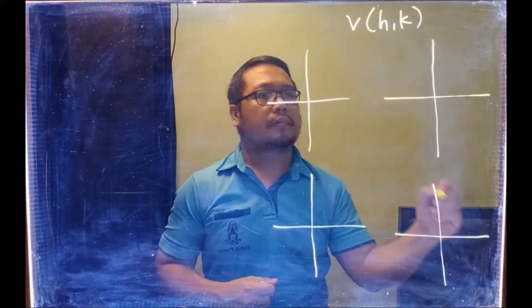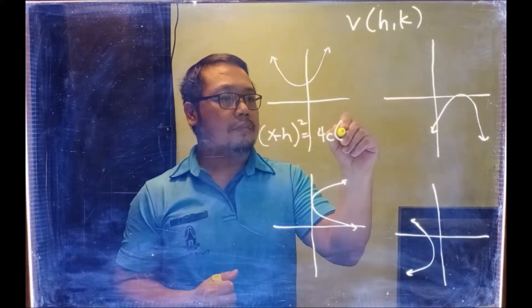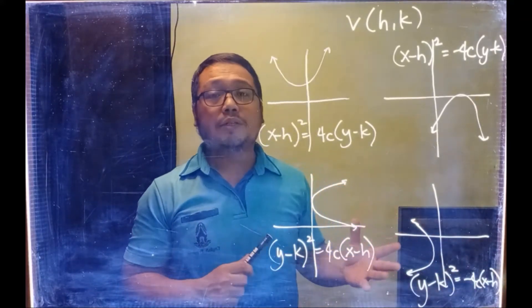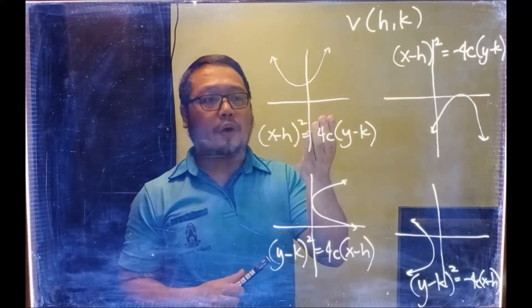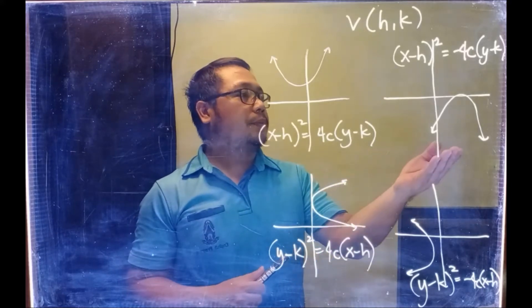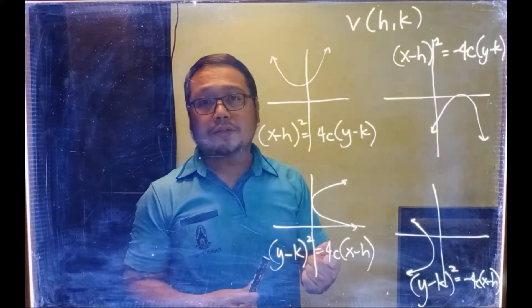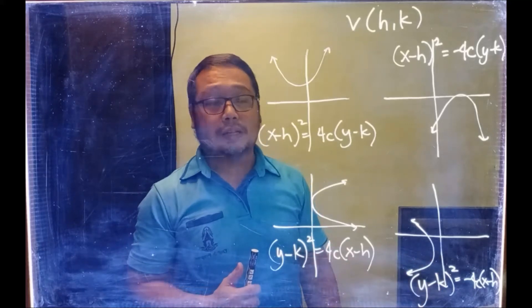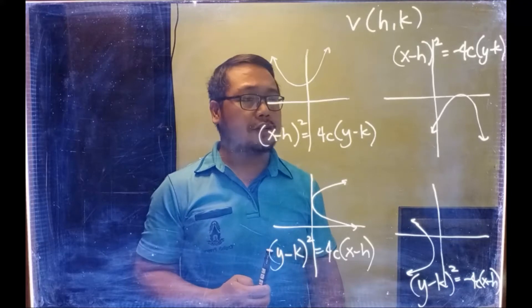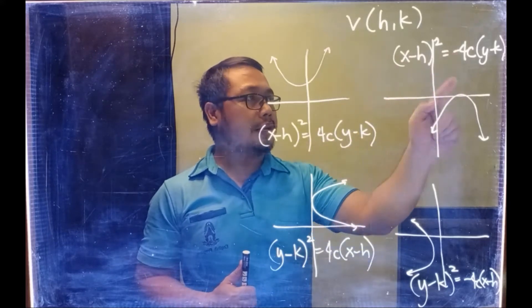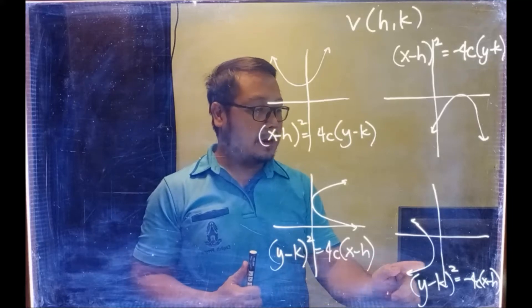This time, let's talk about the parabola whose vertex is at some point (h,k). A parabola whose vertex is at (h,k) that opens upward has a standard form equation shown here. The parabola that opens downward has its standard form equation shown here. The parabola that opens to the right has its equation, and the parabola that opens to the left has its equation. Note the difference is just the sign: positive C for upward and to the right, negative C for downward and to the left.